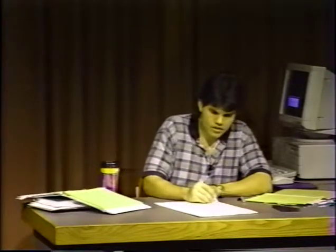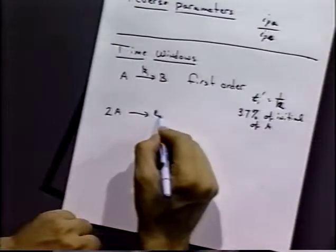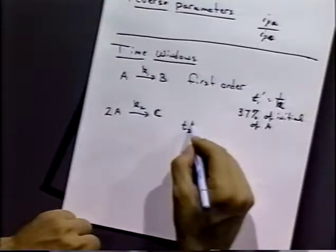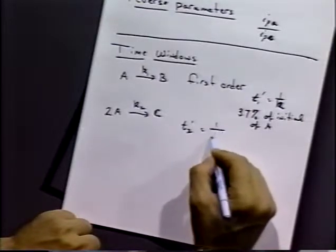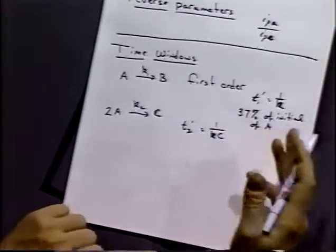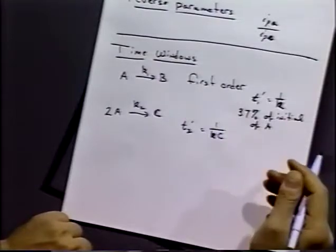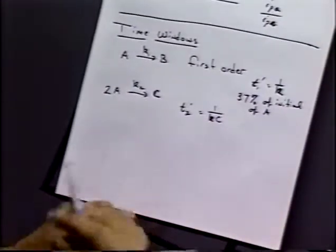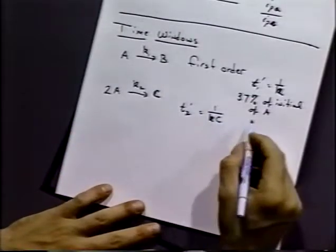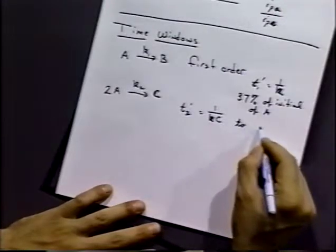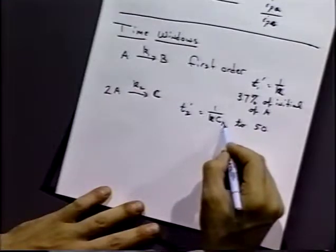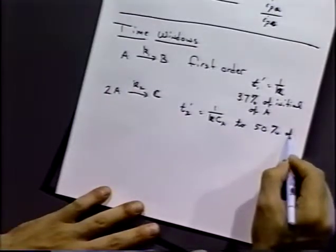For second order reactions, say you have 2A to C, T2 has a slightly different form, and it's going to be 1 over Kc. The larger the amount of concentration we've got of our reacting species, the faster that reaction is going to take place. So Kc together is going to give us our time scale. So 1 over Kc gives us 50%, and C is the concentration of A, to 50% of the initial.